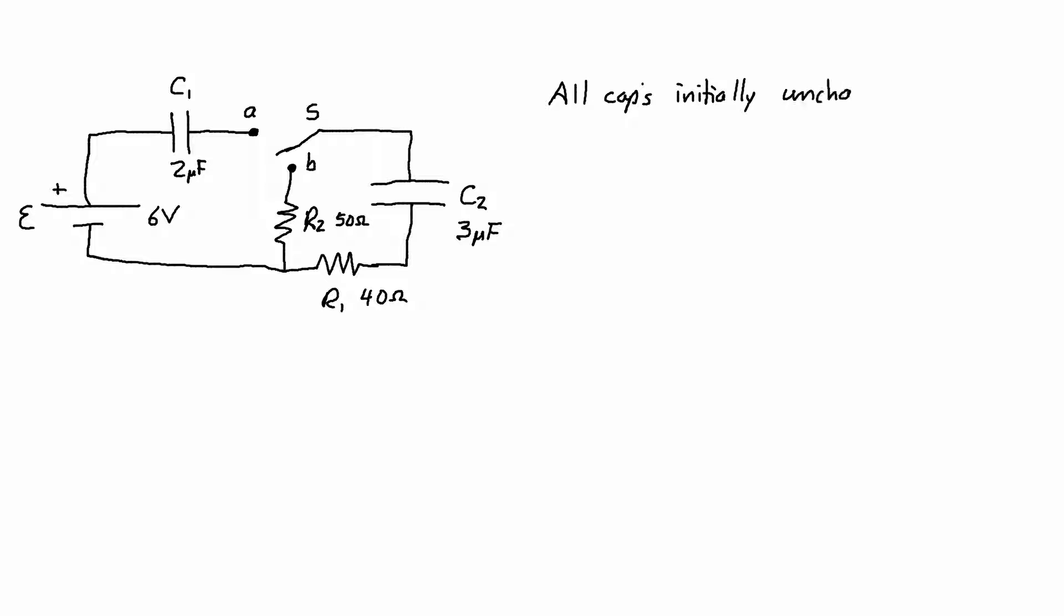Now all capacitors are initially uncharged. That means that Q1 initial is 0 and Q2 initial is 0. So then at t equals 0, the switch is closed at A.